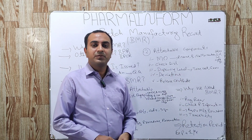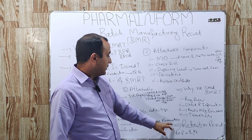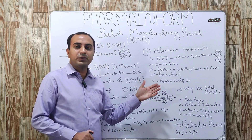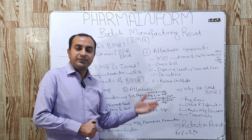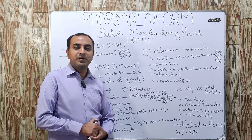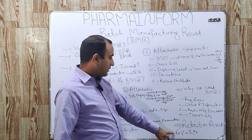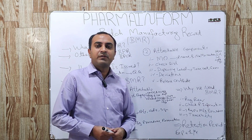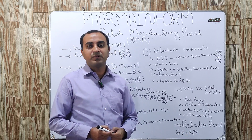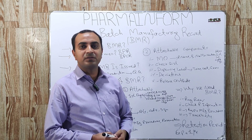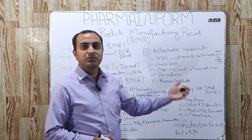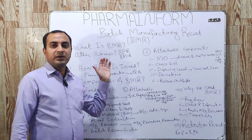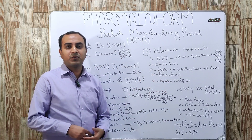The retention period of BMR: for how long will we retain the BMR? The answer is simple — the BMR retention time is expiry date plus one year. If the expiry date of a product is two years, we will retain its BMR in the record room until three years. That was all about the batch manufacturing record.